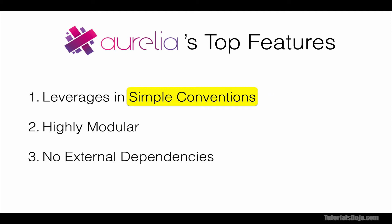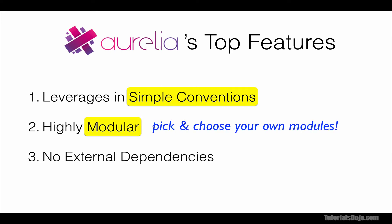Second, Aurelia is highly modular. It is composed of smaller, focused modules which you can use together as a full-featured framework, or alternatively, you can pick and choose to build a custom solution. This gives developers much flexibility in which specific modules they want to implement in their application.